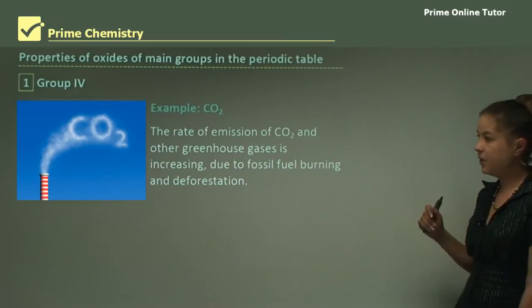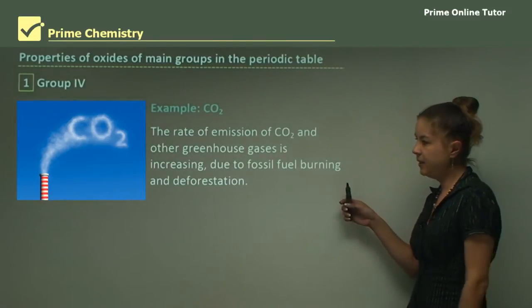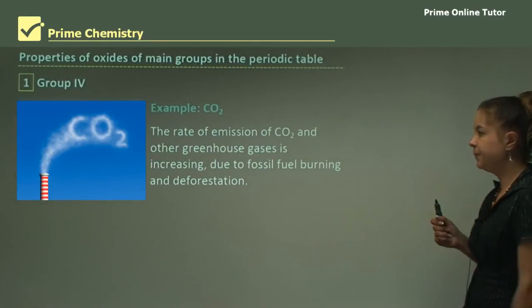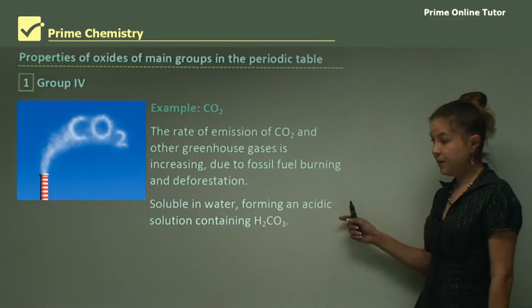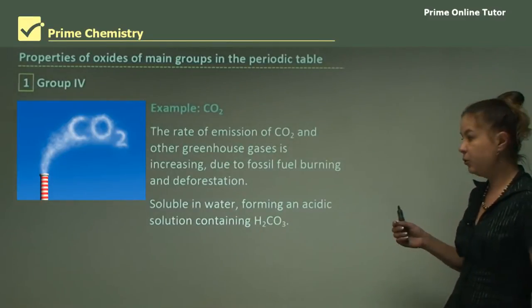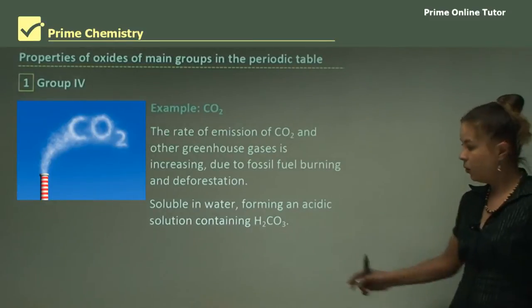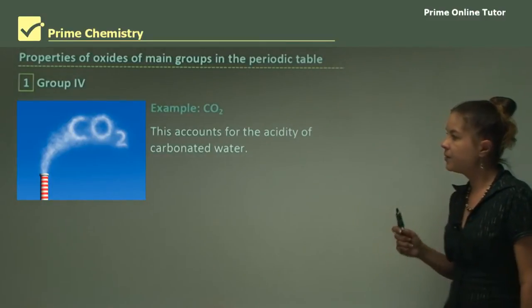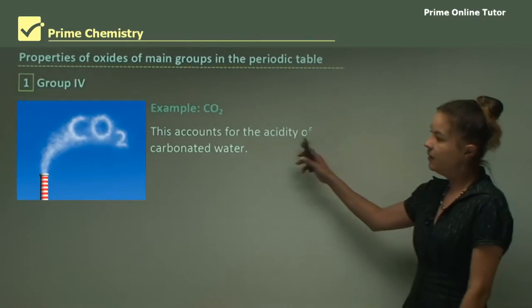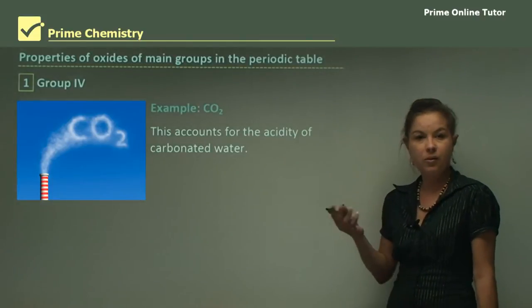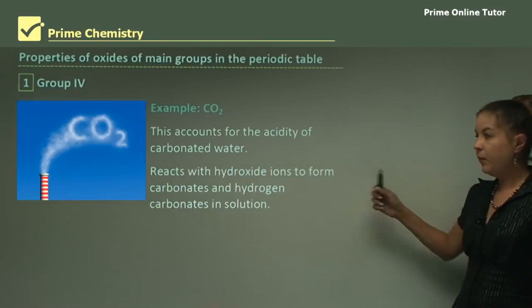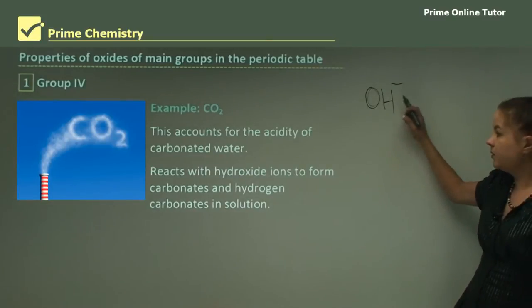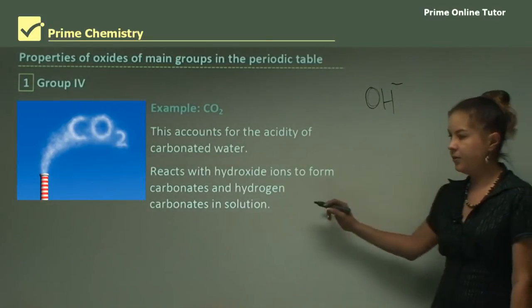The rate of emission of CO2 and other greenhouse gases is increasing because of fossil fuel burning and deforestation, which is quite bad for our environment. CO2 is soluble in water and forms an acidic solution containing hydrogen carbonate or carbonic acid. The production of carbonic acid accounts for the acidity of carbonated water or soft drinks. It reacts with hydroxide ions OH- to form carbonates and hydrogen carbonates in solution.